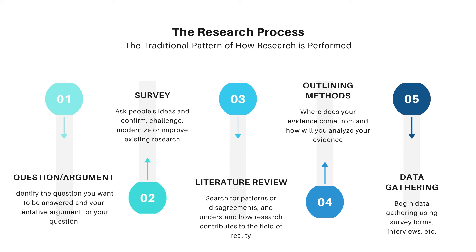Third is the literature review — search for patterns or disagreements and understand how research contributes to the field. You have to look for books or journals related to your interest of study. Fourth is outlining methods — ask yourself where your evidence comes from and how you will analyze it. Fifth is data gathering — begin data gathering using survey forms, interviews, and other methods. After data gathering, you now have your results: what did you observe, what are the statistics, and how many people support your idea?